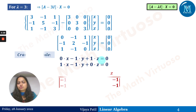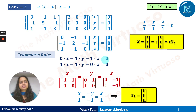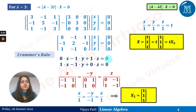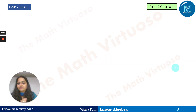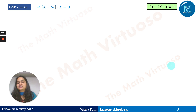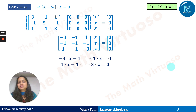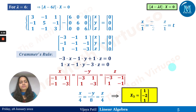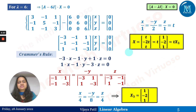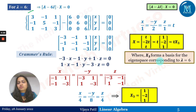Moving ahead, for λ = 3, using the same method, we get x₂ which is a basis for the eigenspace corresponding to λ = 3. Similarly for λ = 6 — since λ = 2, 3, 6 are all distinct, we use the same method of Cramer's rule. We find x₃ corresponding to λ = 6 as [1, −2, 1].